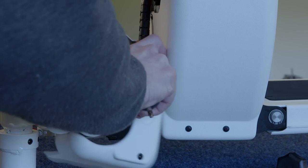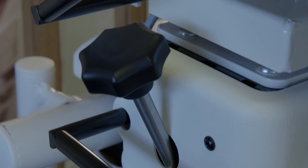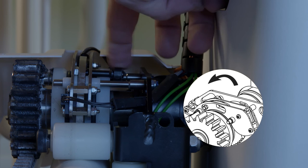Should the overspeed governor engage, follow these steps to reset the system. Turn off the stairlift. Then, using the manual winding handle, wind the stairlift in the upward direction. The OSG arm should become loose from the rail.